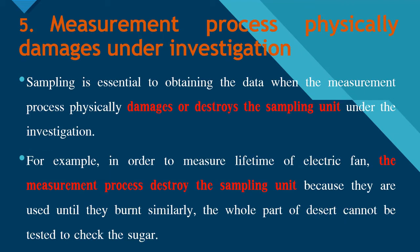Number 5: Measurement Process Physically Damages Unit Under Investigation. Sampling is essential to obtain data when the measurement process physically damages or destroys the sampling unit under investigation. For example, to measure the lifetime of an electric fan, the measurement process destroys the sampling unit because we operate the fan until it burns out. So the whole population cannot be tested.